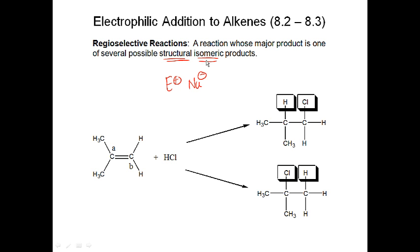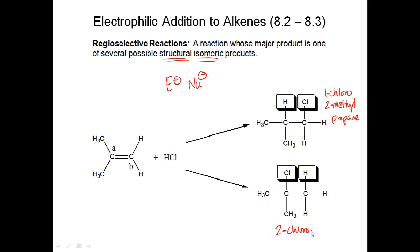Remember, structural isomers have different IUPAC names. For instance, adding hydrogen to carbon B and chlorine to carbon A gives 2-chloro-2-methylpropane, while the reverse gives 1-chloro-2-methylpropane. These two products have different IUPAC names, so they are structural isomers.